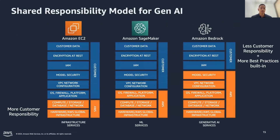Lastly, I wanted to share the shared responsibility model for Gen AI. Here at AWS, we're able to help all types of builders — from those who have traditional machine learning capabilities to those just wanting to deploy quick generative AI without the underlying setup required. You see this transition from being able to deploy on your own server with EC2, to using SageMaker — our fully managed machine learning service — all the way to using Bedrock, the fully managed service that offers a choice of foundation models. As you iterate through, you have less customer responsibility with more built-in best practices.